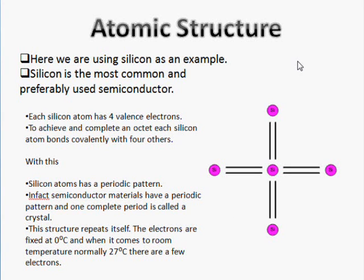Silicon atoms double bond with neighboring silicon atoms, with each bonding to four others. This creates a periodic pattern, and one complete period is called a crystal.